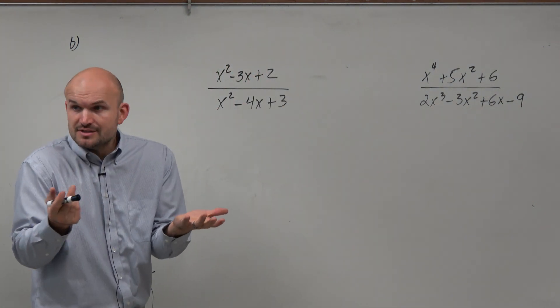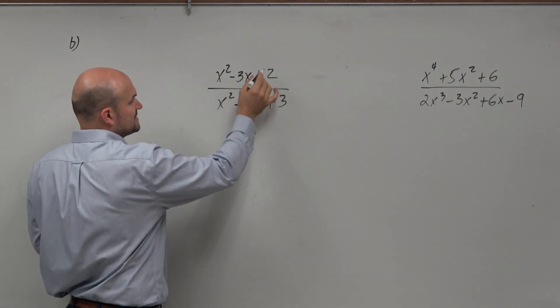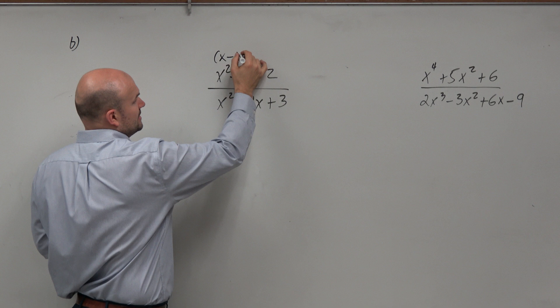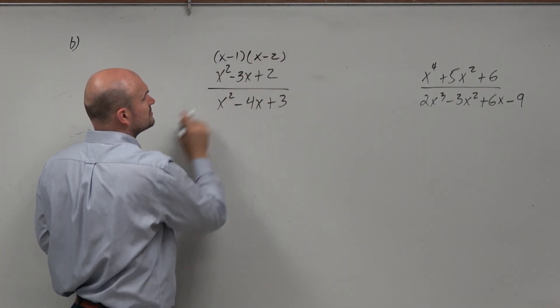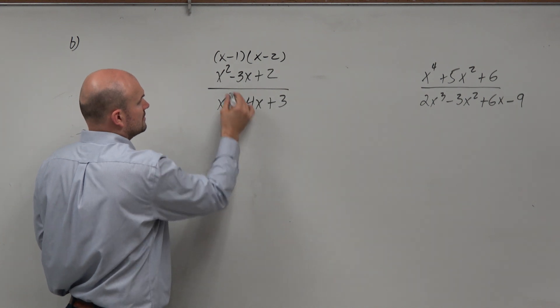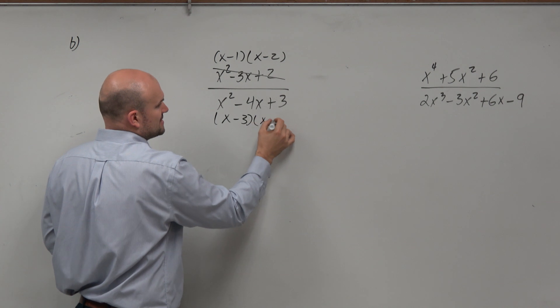And again, we're just trying to simplify. So all we're going to do is think factoring. So obviously, hopefully we get this. We get x minus 1 times x minus 2. Looks like that works. And then this one looks like it'd be factored into x minus 3 times x minus 1.